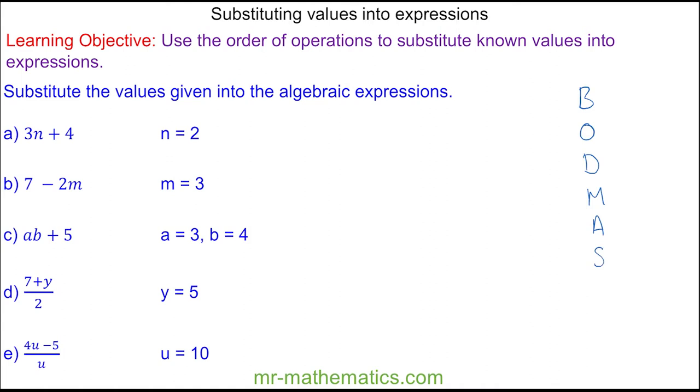We begin with question a where we have 3n plus 4. This means 3 multiplied by n, and we're going to substitute in that n is equal to 2. So we have 3 multiplied by 2 plus 4. 3 times 2 is 6, and 6 add 4 is 10.